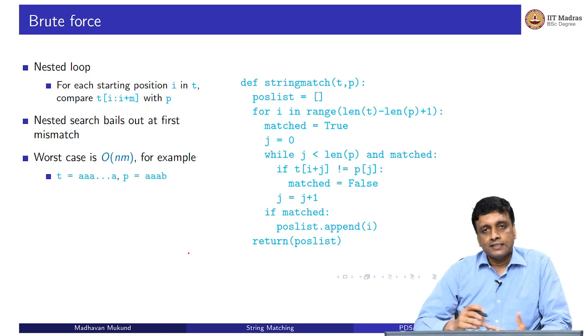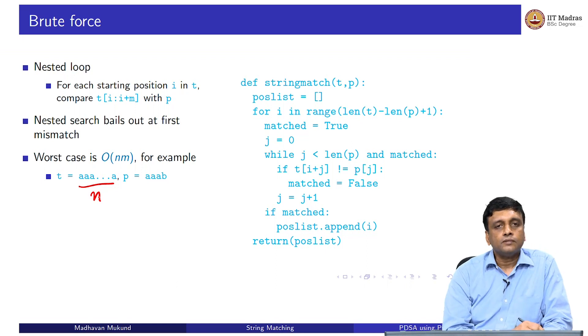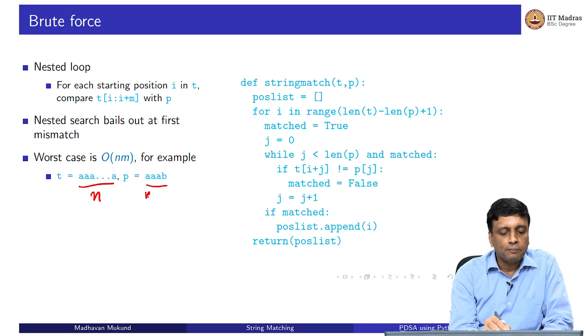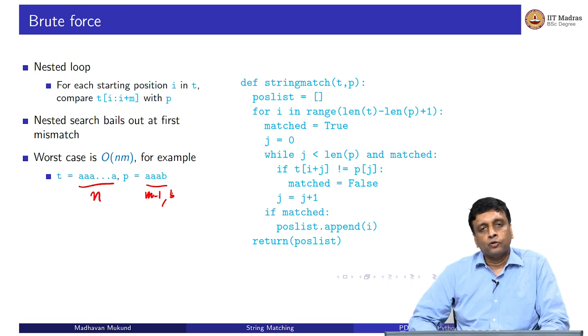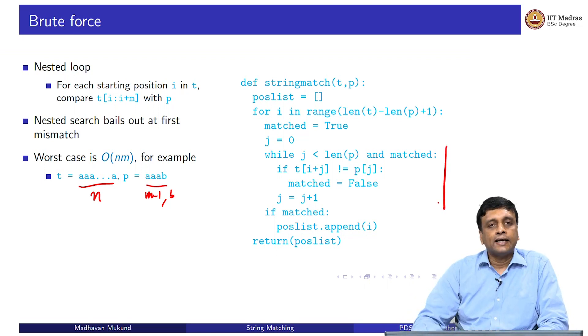Nevertheless, this is in general going to be bad because in general, I would have a lot of overlap ending with a mismatch. I could have for instance, a text which has N A's and a pattern which has M minus 1 A's plus a B. Now what I am going to do is I am going to for each slice, I am going to first look at the first M minus 1 letters and believe there is a match. And then when I reach the last letter, I find there is a mismatch and only then do I get out of the loop.